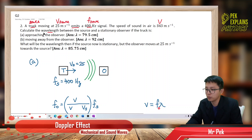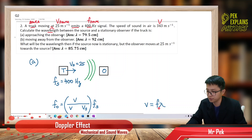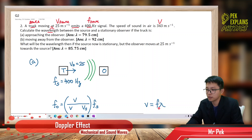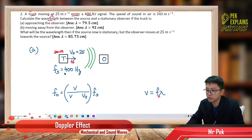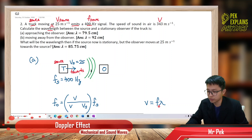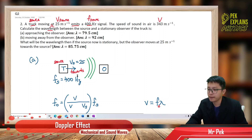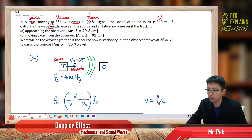We want to find the wavelength, lambda, between the source and the stationary observer. The observer is not moving. For question A, the truck is approaching the observer, meaning the source is moving towards the observer. So the wavelength is being compressed. We have the frequency of source 400 hertz, and velocity of source is 25 meters per second.